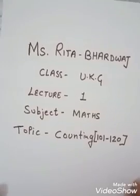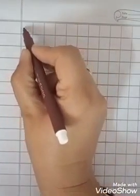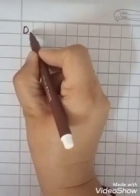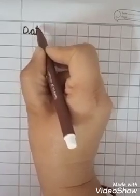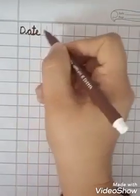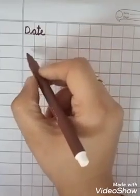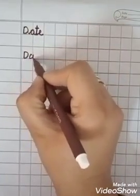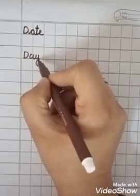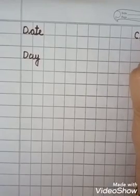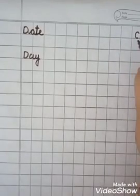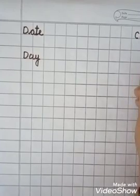First, open your page in your math notebook. In the first box, you have to write here: Date — D, A, T, E. Then, leave one box and write down here: Day — D, A, Y. Then, on this side, you will write C.W., which means classwork. C for class, W for work.